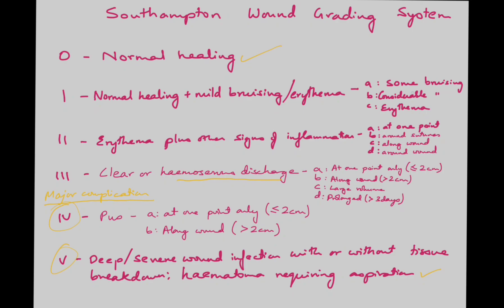1A is some bruising. 1B is considerable bruising. 1C is mild Erythema. 2A is Erythema plus other signs of inflammation at one point. 2B is around sutures. 2C is along the wound. 2D is around the wound. 3A and 3B are similar to 4A and 4B, so Grade 4 subtypes don't need to be memorized separately. 3A is at one point only. 3B is along the wound. 3C is large volume clear or hemocerous discharge. 3D is prolonged clear or hemocerous discharge, meaning more than 3 days.